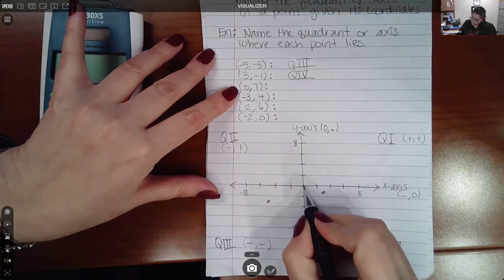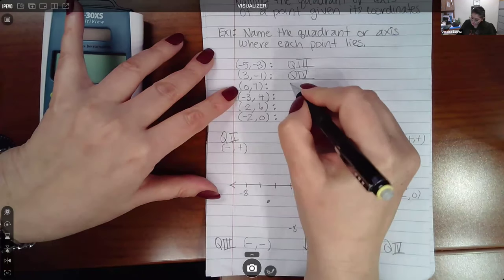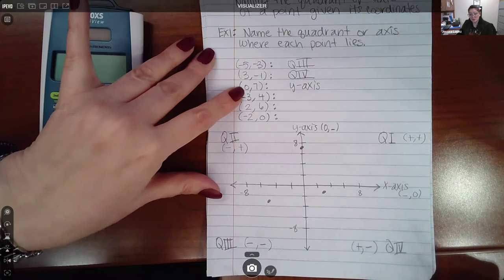Here we have zero for the x coordinate, but positive seven for the y coordinate, so that doesn't put it on top of the y-axis. Notice there's no x coordinate, just a y coordinate.